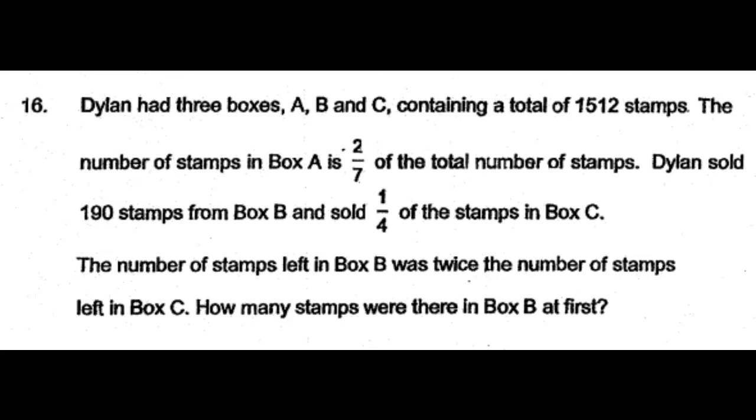Dylan had three boxes A, B, and C containing a total of 1512 stamps. The number of stamps in box A is 2/7 of the total number of stamps. Dylan sold 190 stamps from box B and sold 1/4 of the stamps in box C.